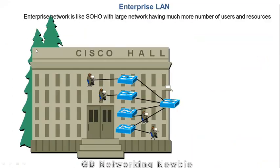Now let's look at enterprise local area network, or enterprise LAN. An enterprise network is just like SOHO, but with large networks having a much greater number of users and resources. If we extend in terms of number of users and number of resources, then SOHO becomes an enterprise network.